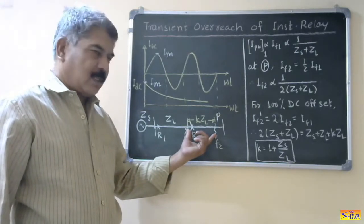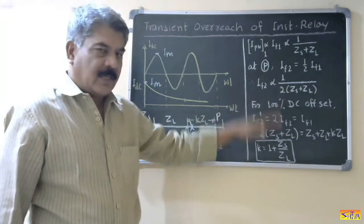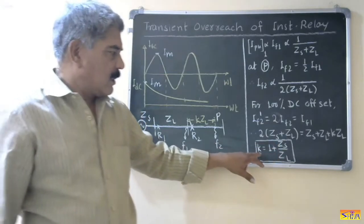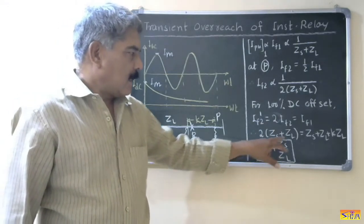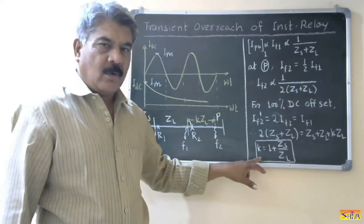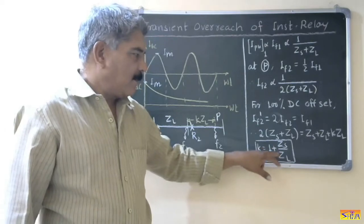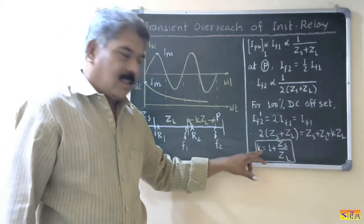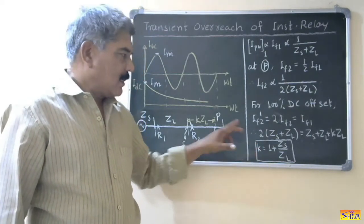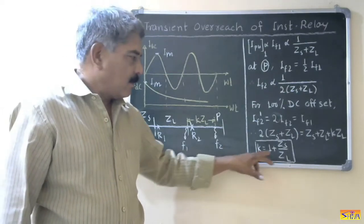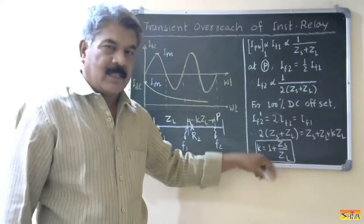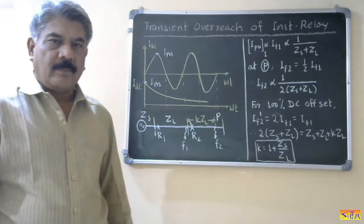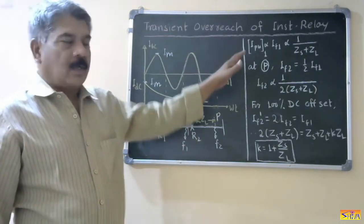In the worst condition the relay will reach up to this point. If the DC offset value is reducing, K is also reducing. From the equation K = 1 + ZS/ZL, larger the value of ZS, more will be the overreach. Therefore, instantaneous relay is not preferred when the ratio of source to line impedance is higher, because if it is higher, the overreach will be more. This concludes the discussion on transient overreach of the instantaneous relay.